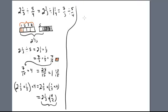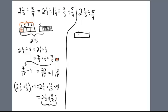Let's take that exact same problem — 2 and 1 third divided by 5 quarters — and do the partition model, but in the other order. So instead of dividing by 5 first and then multiplying by 4, what happens if we multiply by 4 first and then divide by 5? Let me show you why that works.